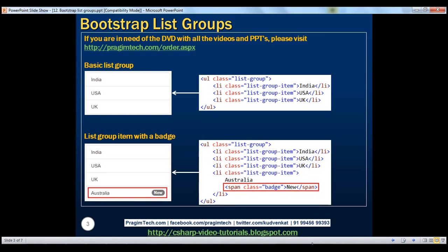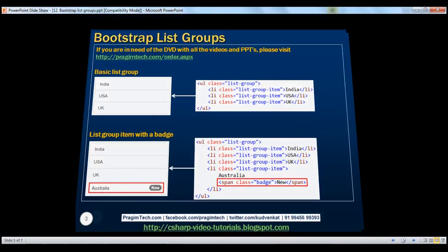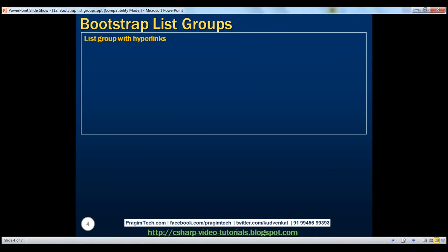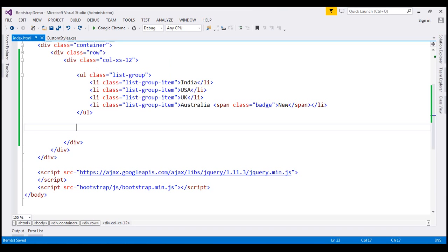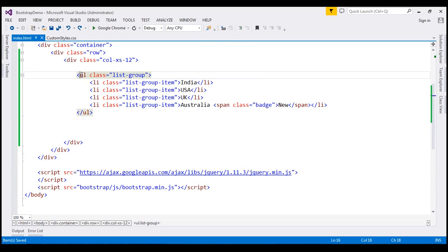And here is the HTML required. Now let's discuss creating a list group with hyperlinks. We want to create a list group with three company names. Whenever we click on any of the list items, we want to be redirected to that respective company website. To create a list group with hyperlinks, there are two things we need to do. First, instead of using an unordered list element, use a div element. Instead of using a list item element, use an anchor element.